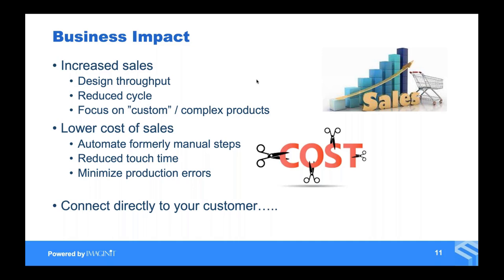Those mistakes we talked about — interpreting designs, missed elements — can all be minimized. Production errors can be avoided: best case scenario in a production error, the guy on the shop floor sees it, knows it's wrong, calls it out, stops the process, and you fix it properly. But in the real world, he goes ahead and cuts it anyway, and now we've got the wrong product going out the door. Those are huge errors that we can avoid through automating those tasks.